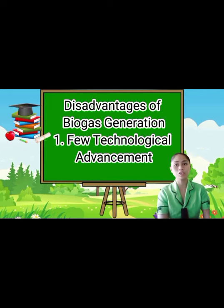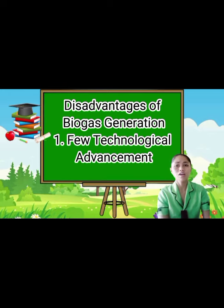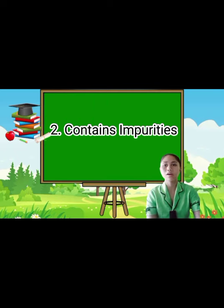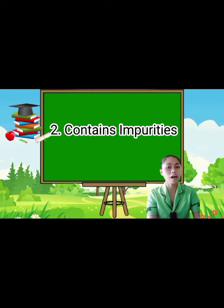Disadvantages of biogas generation. First is poor technological advancement. An unfortunate disadvantage of biogas today is that the systems used in its production are not efficient. There are no new technologies yet to simplify the process and make it accessible and low cost. Large-scale production to supply a large population is still not possible, and many governments are not willing to invest in the sector. Second is that it contains impurities. After refinement and compression, biogas still contains impurities. If the generated biofuel is used to power automobiles, it could corrode the metal parts of the engine, leading to increased maintenance costs. The gaseous mix is much more suitable for kitchen stoves, water boilers, and lamps.